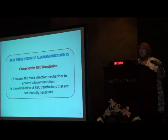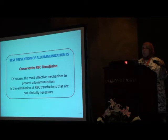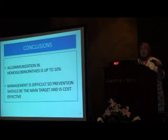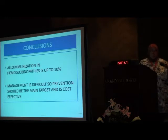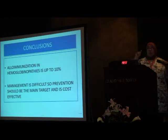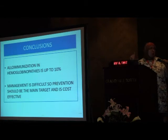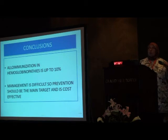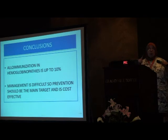The best prevention of alloimmunization is to practice conservative red cell transfusion and stick to guidelines. In conclusion: alloimmunization in Egyptian hemoglobinopathy patients has a minimum reported value of 10% — meaning 1 in every 10 patients is liable to have alloantibodies. Management once alloantibodies occur is difficult, but prevention is most important and, when calculating cost-effectiveness, prevention is very much cost-effective.